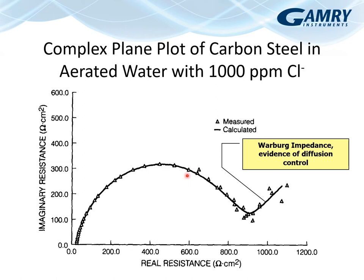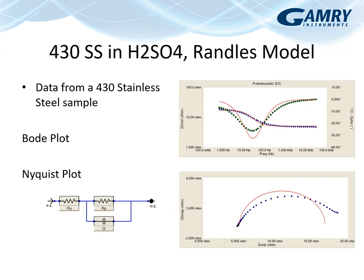Looking at the same data on a Nyquist plot: at high frequencies we have R_u, we transition through the capacitive region, and at low frequencies instead of the semicircle completing down to the axis, it turns around and goes out. This behavior — also seen on the Bode plot — is Warburg impedance, evidence of diffusion control at low frequencies. This data is also very noisy because it's older; if you ran this test with modern equipment it would not be nearly as noisy at those lowest frequencies.